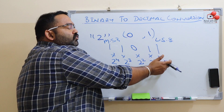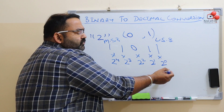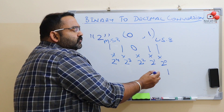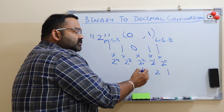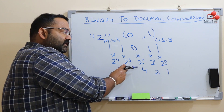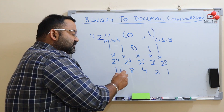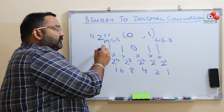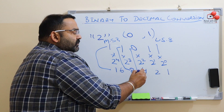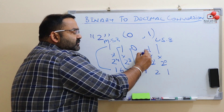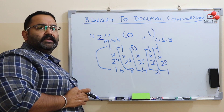So now: 1 into 2 power 0. What is 2 power 0? It is 1. 2 power 1 is 2. 2 power 2 is 4. 2 power 3 is 8. 2 power 4 is 16. So each digit of the binary number will be multiplied by its corresponding power of two.